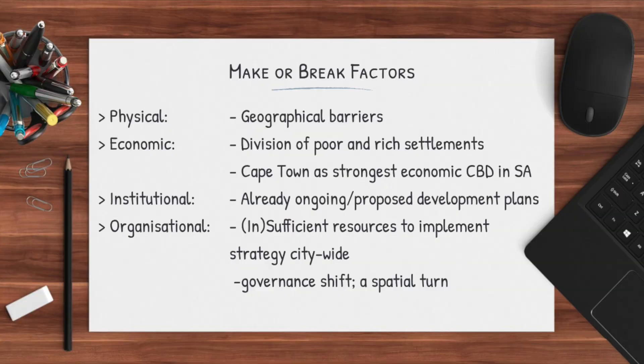There are some factors that can make or break our vision and strategy. For example, the physical factor of geographical barriers, which may limit the possibility to reach certain areas or implement these measures in specific areas due to their physical geographical elements. We also have economic factors, such as the divide between poor and rich settlements, which can make it more difficult to implement measures in poorer settlements.